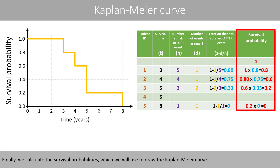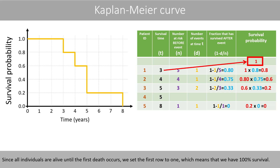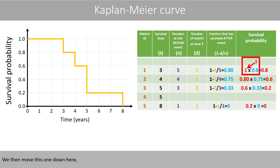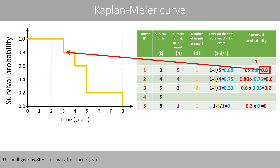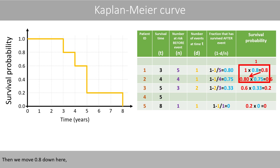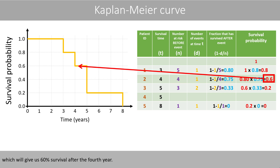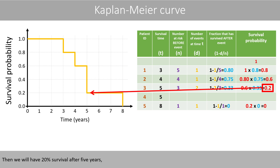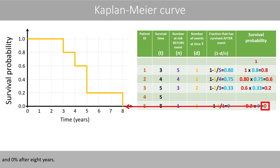Finally, we calculate the survival probabilities, which we will use to draw the Kaplan-Meier curve. Since all individuals are alive until the first death occurs, we set the first row to 1, meaning 100% survival. We then multiply with the fraction in the previous column: 1 × 0.8 gives 80% survival after three years; 0.8 × 0.75 gives 60% survival after four years; then 20% survival after five years, and 0% after eight years.